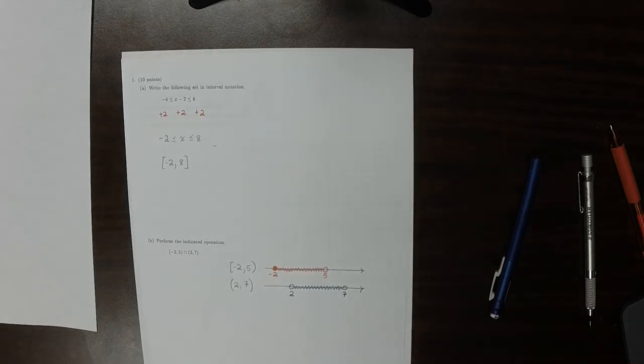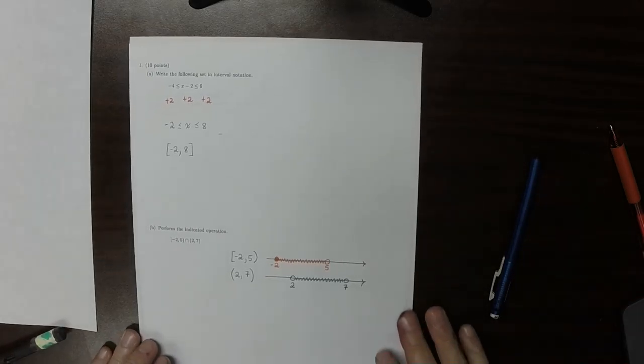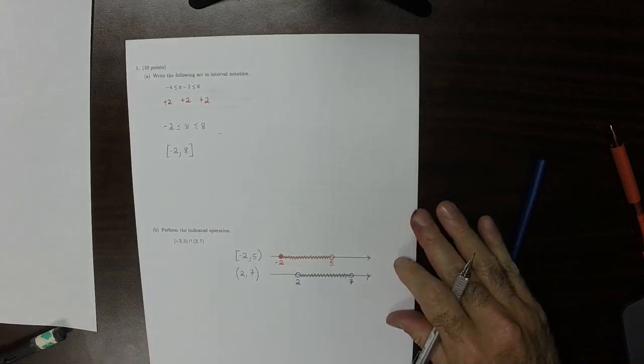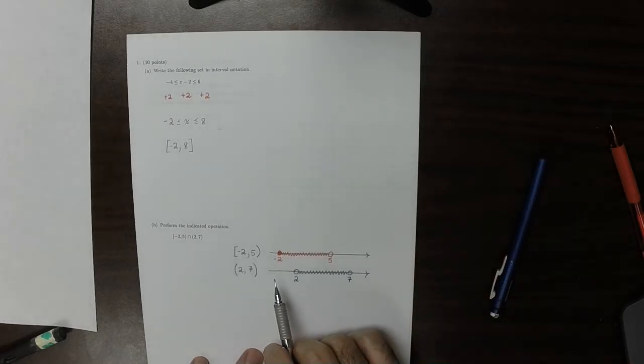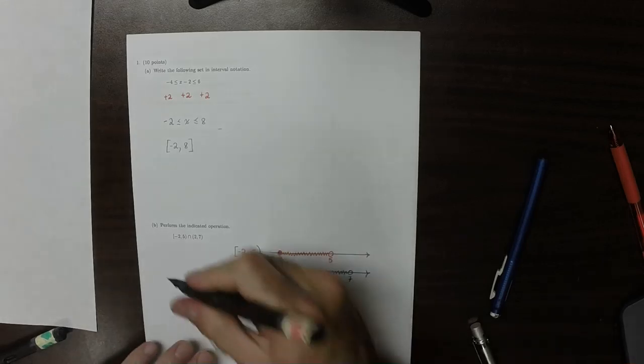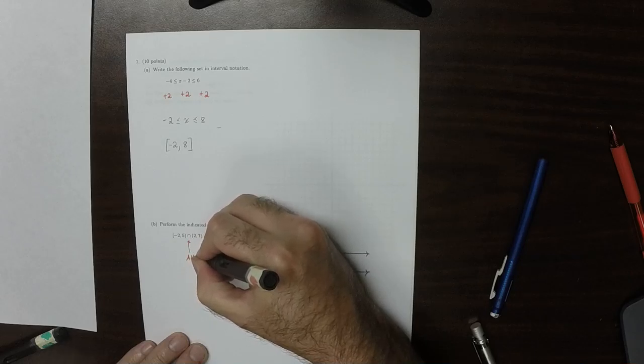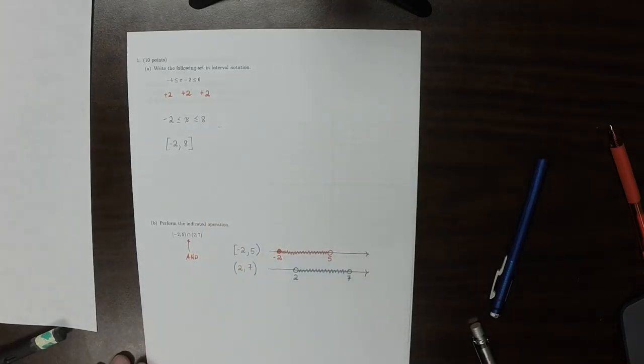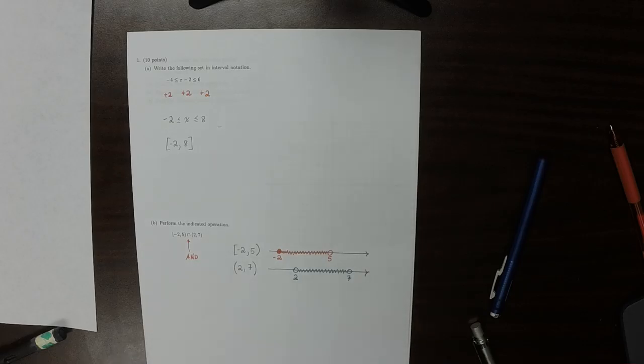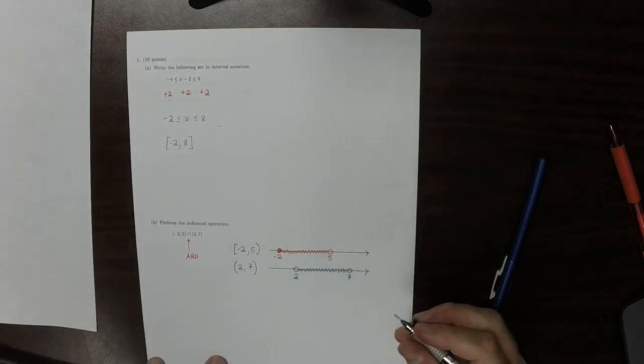We want to find the intersection of these intervals, which is to say, remember, that intersection means and. So that is to say that we want a red point and also a green point.